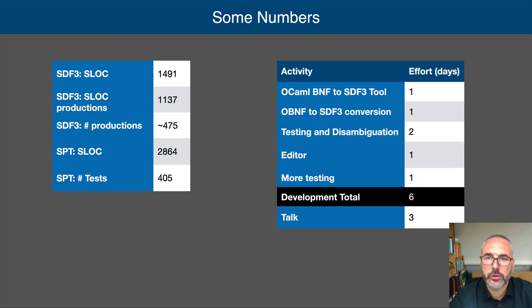To get an impression of the effort it took to produce the syntax definition, consider the following numbers. The SDF3 definition consists of some 1500 source lines of code, excluding blank lines and comments. This reduces further to some 1150 lines of code when we remove SDF3 section keywords. The syntax definition consists of about 475 productions. We tested the syntax definition with just under 3000 source lines of code for a total of 405 tests. And it took about 6 days to develop the syntax definition, compared to the 3 days it took to create and record this talk.